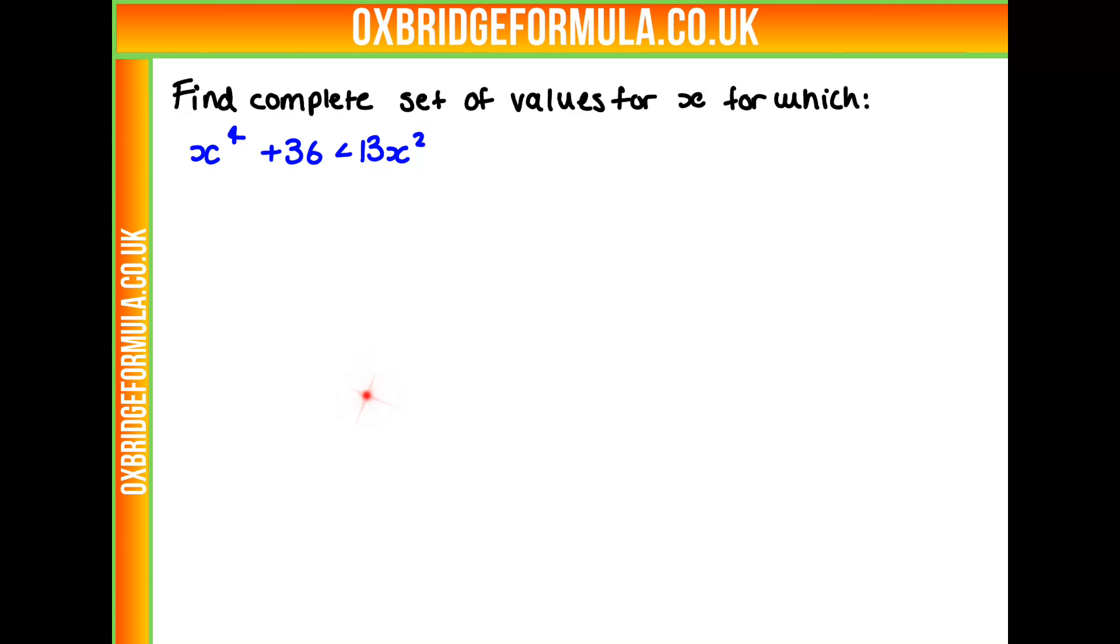So what will be our first step in solving this question? Well, let's rearrange it to get ourselves a nice polynomial. So we can take 13x squared away from both sides, we're going to get x to the power of 4 minus 13x squared plus 36 is smaller than 0.